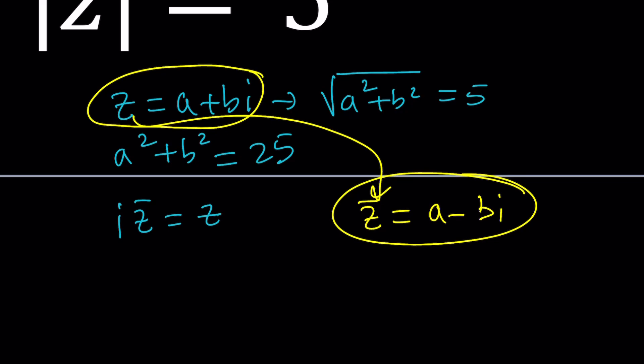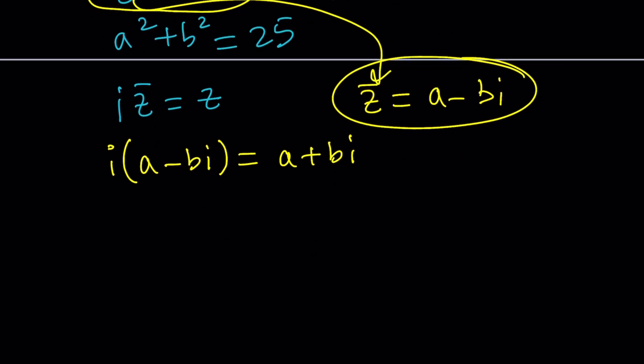Let's go ahead and plug it in. I times a minus bi is supposed to equal a plus bi. How is that possible? You multiply a complex conjugate by i and you get the original number. I times a is ai, not artificial intelligence, but close. And then i times i is i squared. So this is going to be negative bi squared, but that's just positive b because i squared is negative 1. If you're new to complex numbers, I would highly recommend my lecture videos on basics of complex numbers.